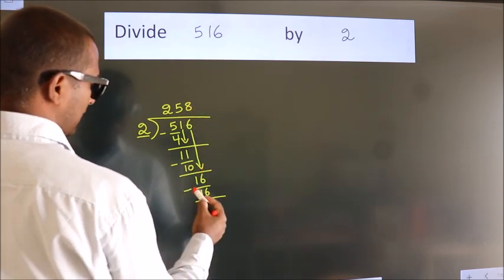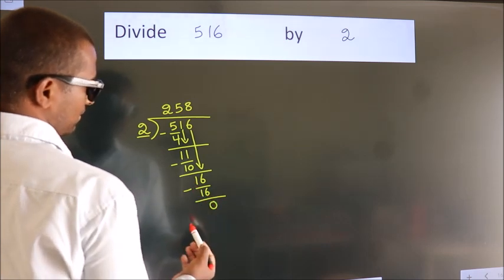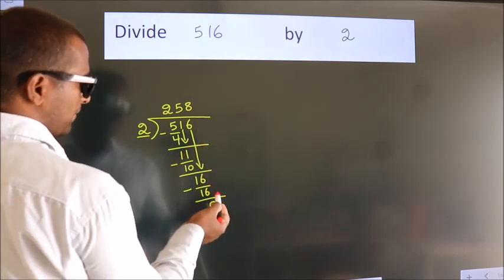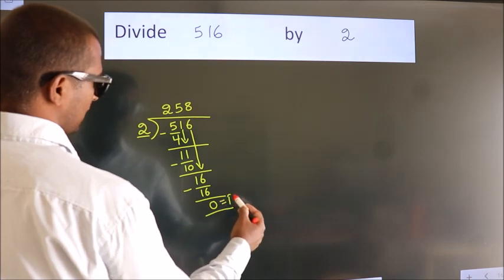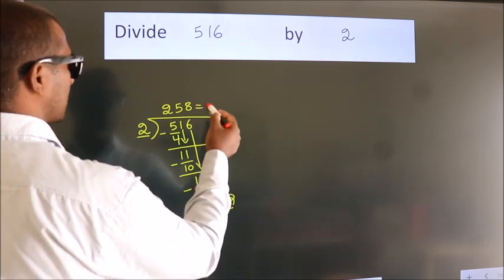Now we subtract, we get 0. No more numbers to bring it down. So we stop here. This is our remainder. This is our quotient.